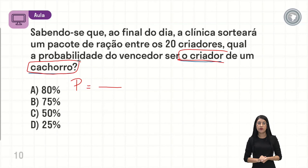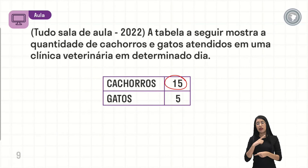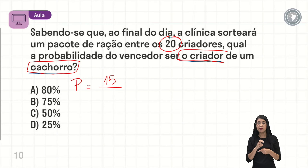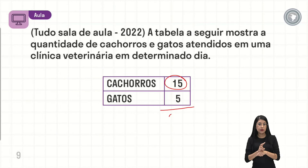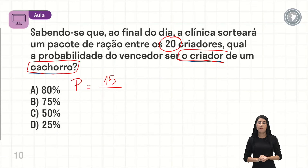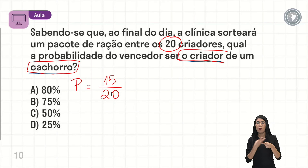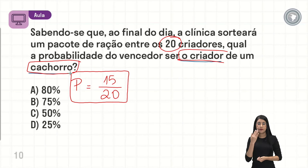E o que a gente tem vai ficar no denominador. A gente tem um total de 20 criadores, que é justamente a soma de 15 mais 5. Do total de pessoas, eu tenho 20. A probabilidade que quero saber é que seja criador de cachorro. Então, em cima no numerador vai ficar o número 15, porque é o que eu quero, e embaixo, no denominador, vai ficar o espaço amostral, que é de 20 criadores. Essa aqui é a minha probabilidade: 15 sobre 20.